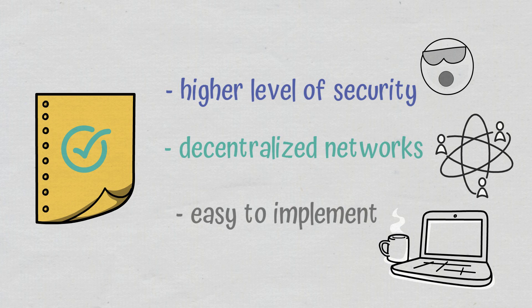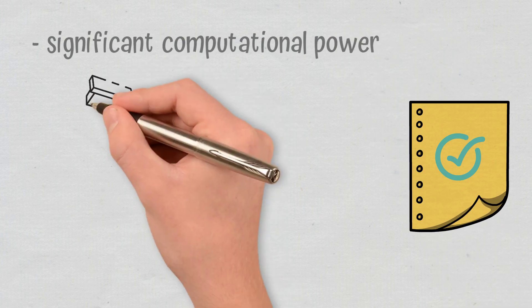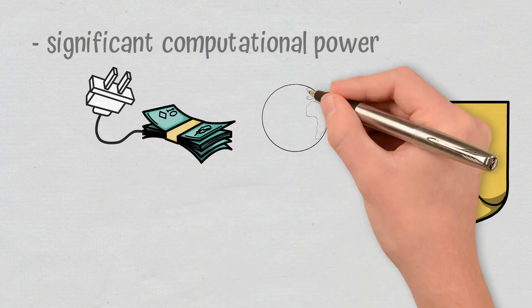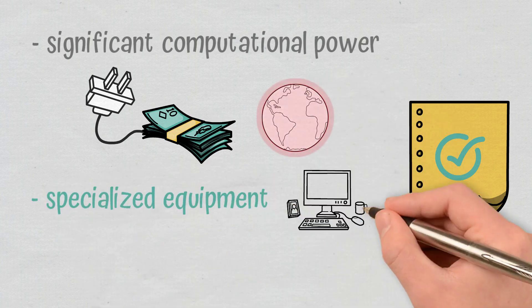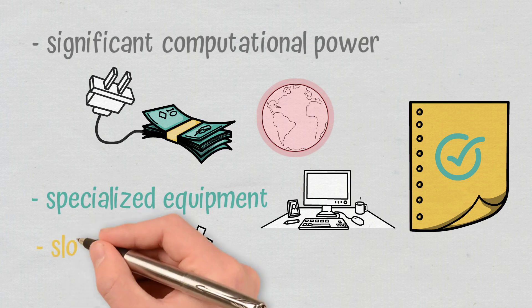Still, Proof-of-Work does come with a few cons. It requires significant computational power, and therefore, it leads to high energy consumption, increased costs, and environmental impact. Specialized equipment is needed, which can prove to be costly and thus calls for a big investment to start. Given the way they work, Proof-of-Work blockchains can be slower.